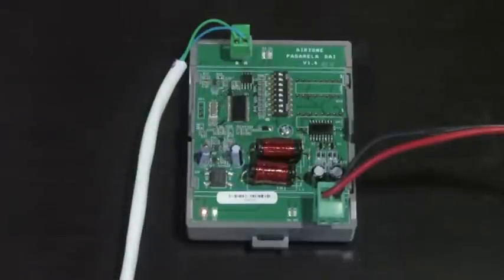The gateway has the following elements: connector for the Airzone main controller, LED for indicating communication with the Airzone main controller, configuration microswitch, connector for the Daikin AC unit, LED for indicating communication with the AC unit and its remote controller, and status LED.